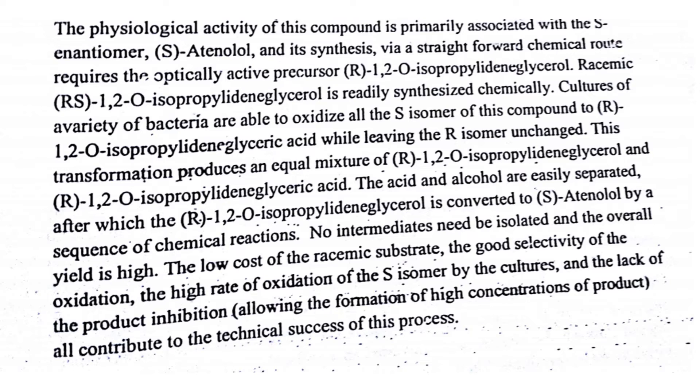The microorganism resolves the racemic mixture and the R isomer remains unchanged. This transformation produces an equal mixture of isopropylidene glycerol and glyceric acid, which are easily separated as acid and alcohol. Later, the R isomer is converted to S by a sequence of chemical reactions. No intermediates need be isolated and the overall yield is high. The process also benefits from low cost, good selectivity of oxidation, high rate of oxidation by the culture, and lack of product inhibition.